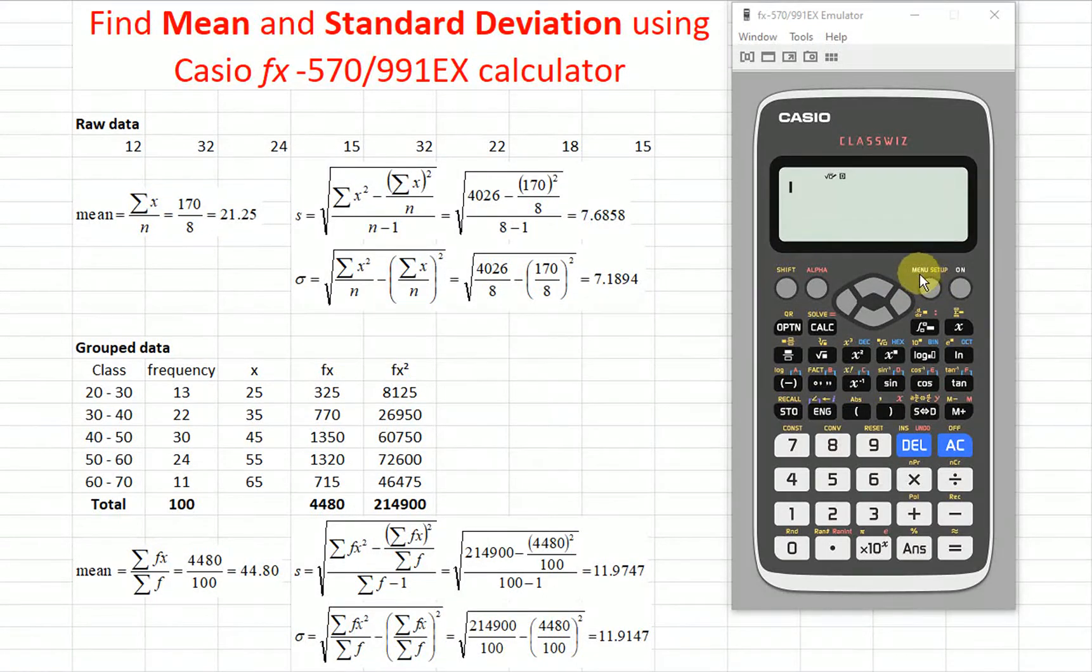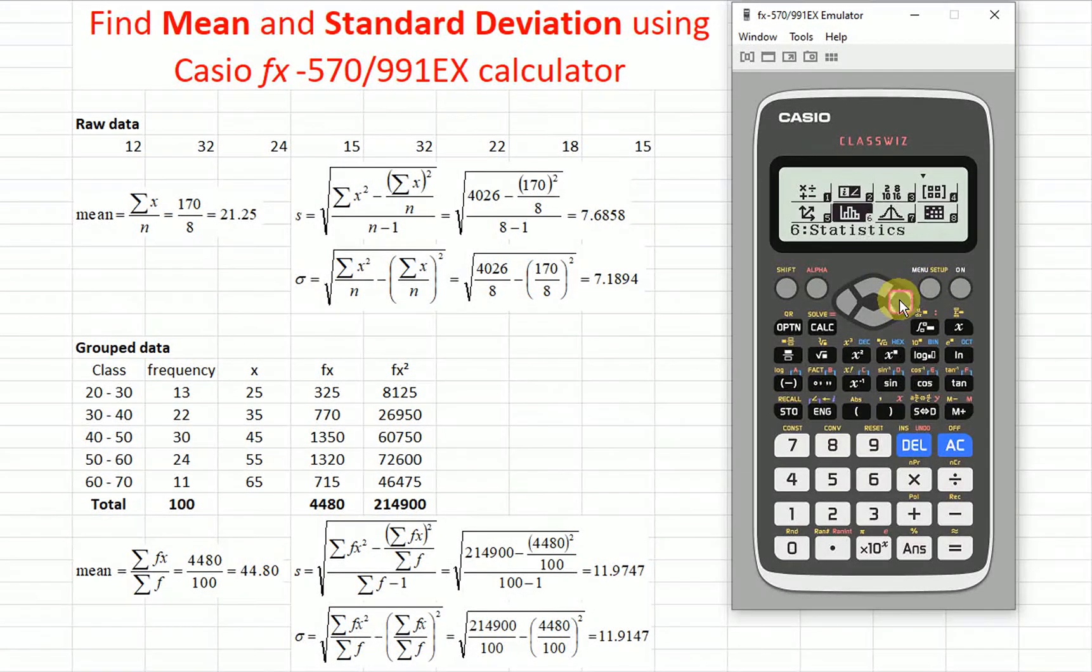So first we press menu, we look for statistics. So statistics 6. This is one variable, so we select one. Now we just have to key in, input all the data.